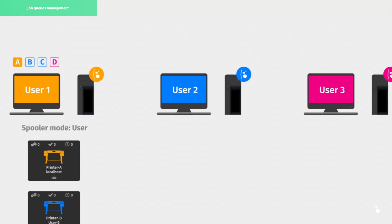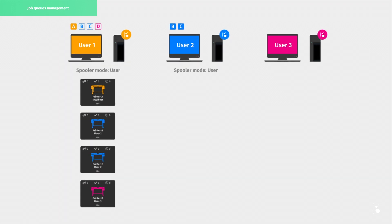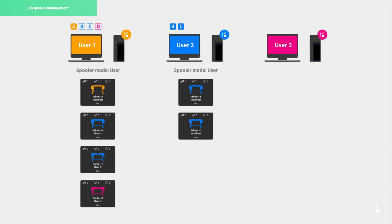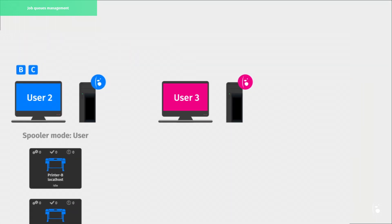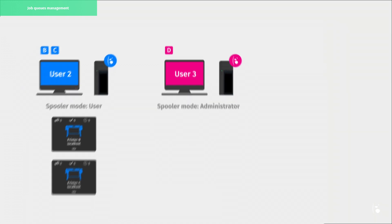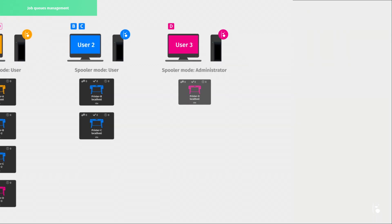User 2 locally drives printers B and C. Their spooler is set up as user mode, so it can only manage printer B and printer C job queues. User 3 locally drives printer D. However, since we set up this spooler in administrator mode, user 3 can see and manage all the printer's job queues.